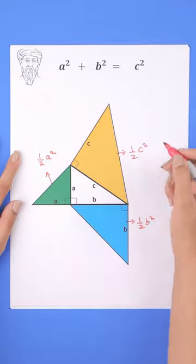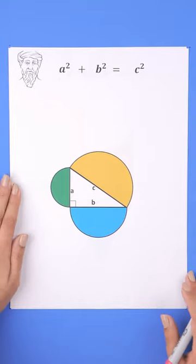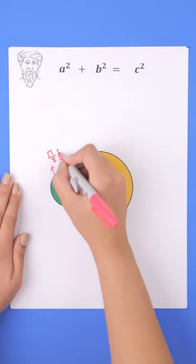Similarly, all these semicircles have the areas, and once again, area of this plus this is this.